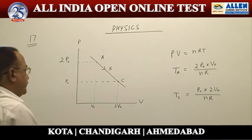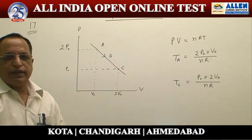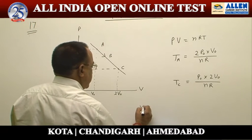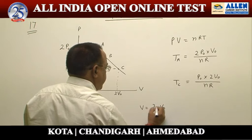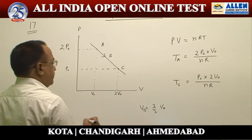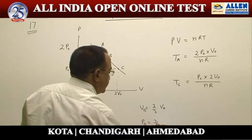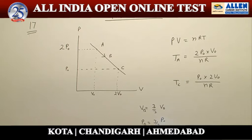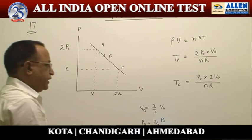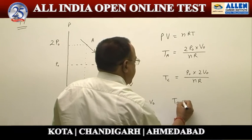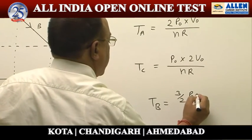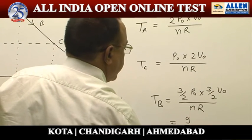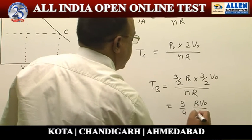Looking at point B, it can be taken at the middle of the line. At point B, volume is 3/2 V₀ and pressure is 3/2 P₀, because it is a straight line. So the temperature at point B is T_B = (3/2 P₀)(3/2 V₀) / nR = 9/4 · P₀V₀ / nR.